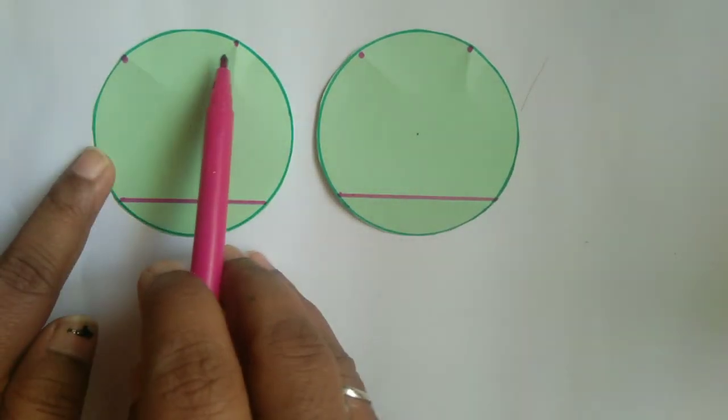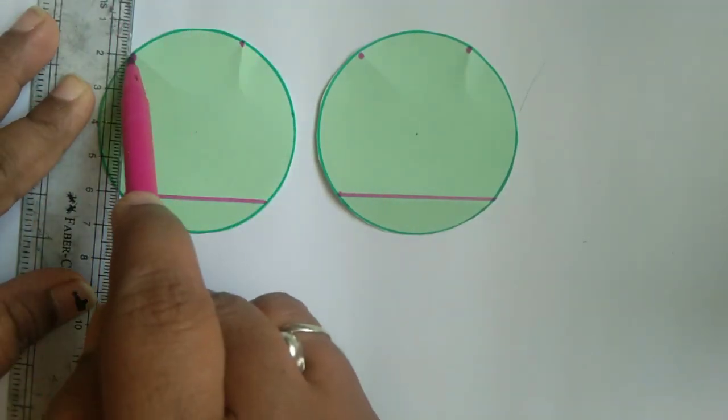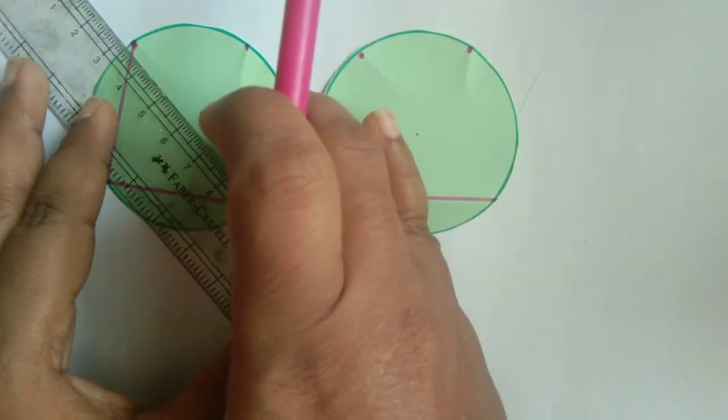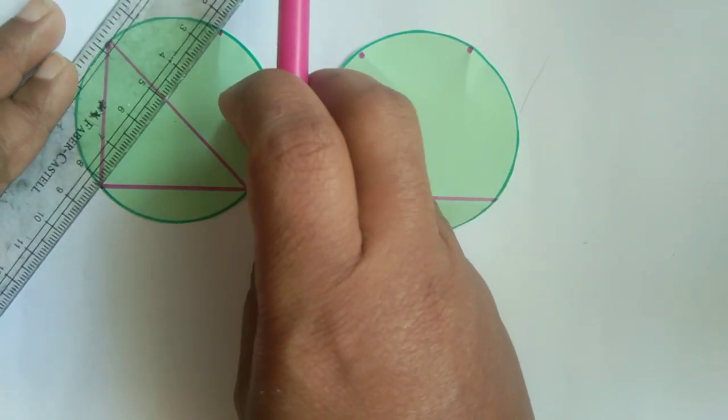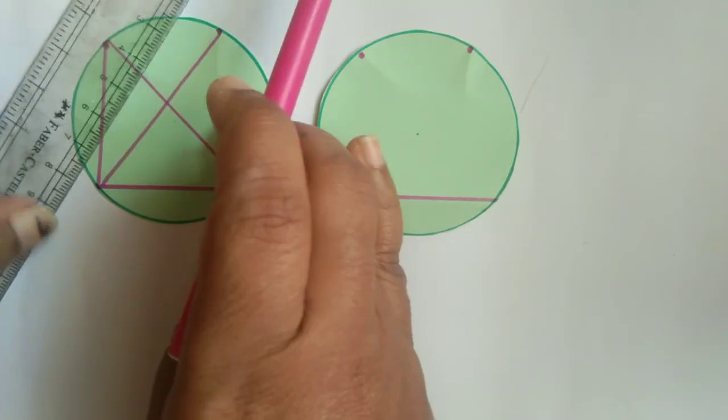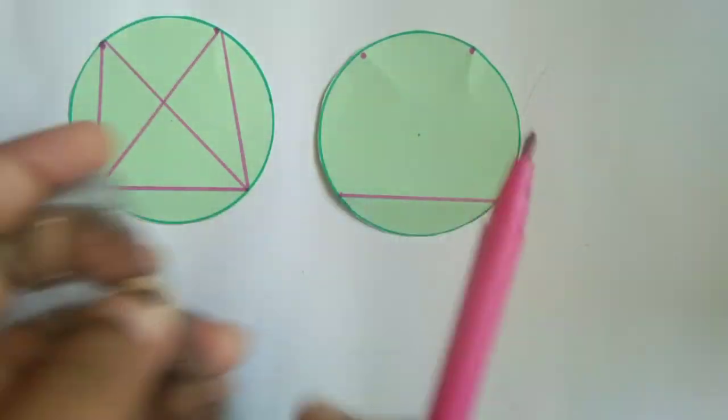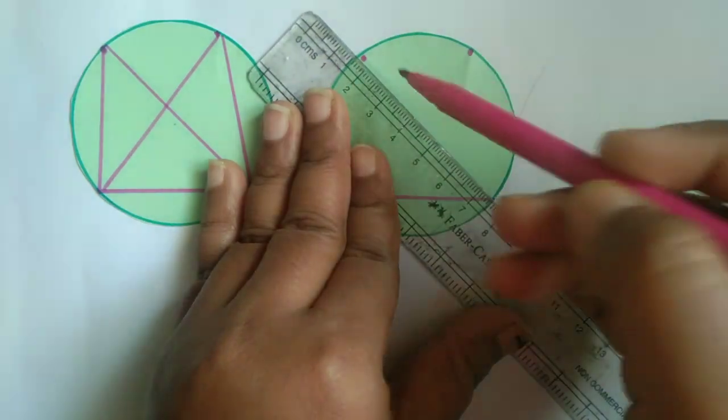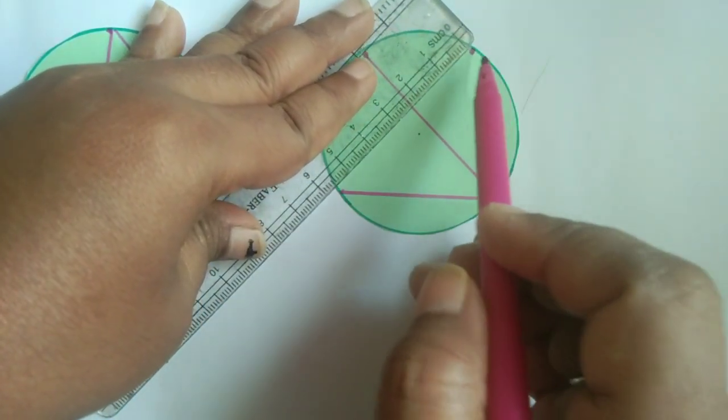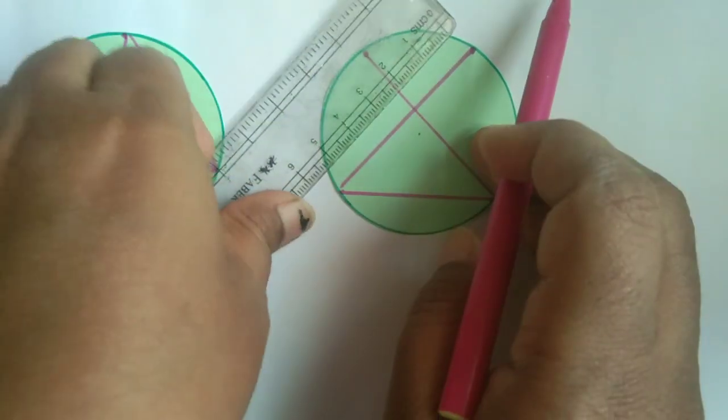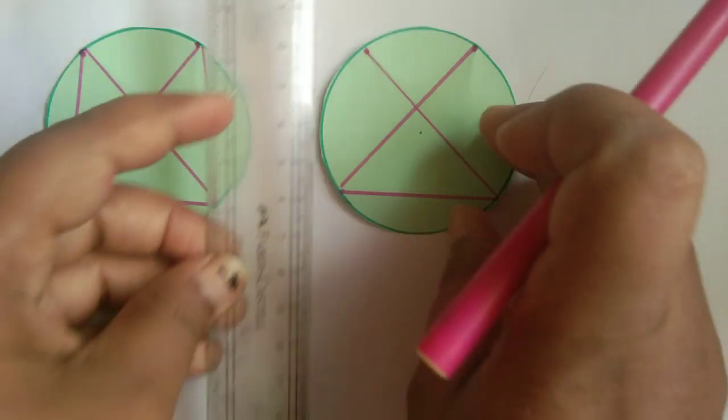Now you can see there are two points on the major arc. We will join those two points like this. The same thing should be done in the other circle.